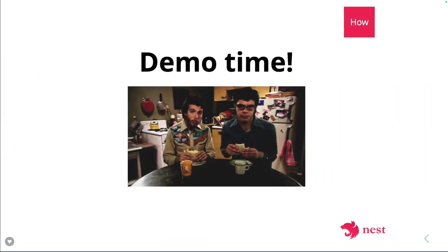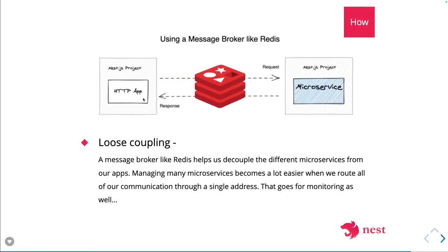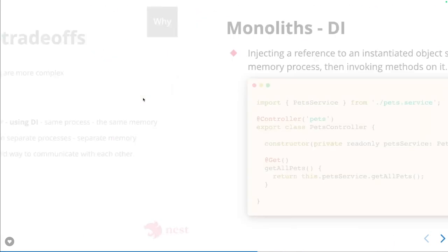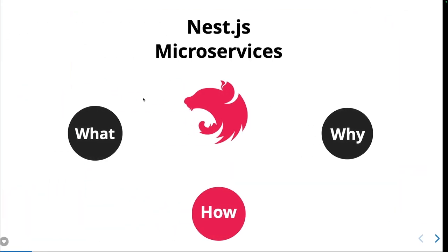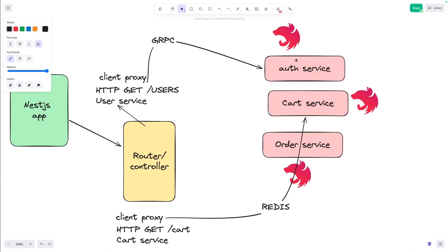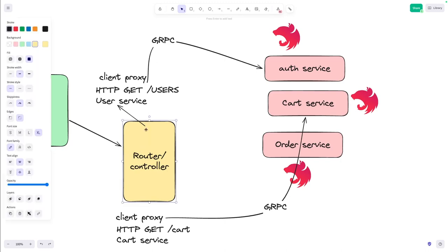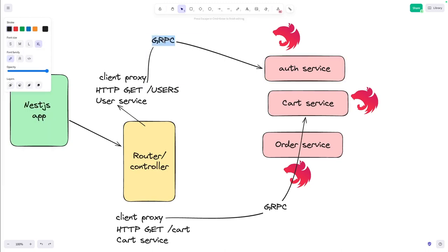For demos, my whole channel is full of NestJS microservices content — I will add a playlist link showing how to build NestJS microservices using Redis, Kafka, RabbitMQ, and gRPC. With NestJS microservices you can create a simple controller and use gRPC client services. Instead of TCP, you can create a gRPC client proxy that talks to the target service — communication between them happens through the defined gRPC protocol.